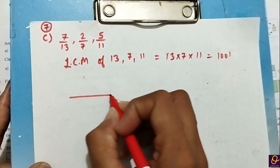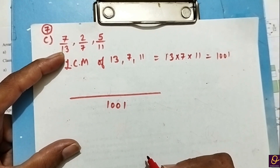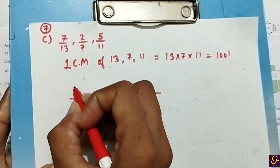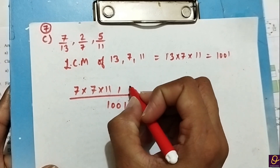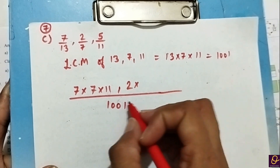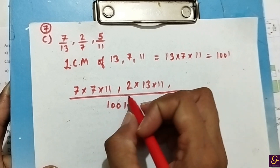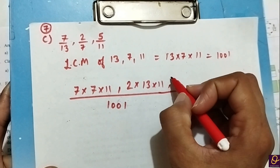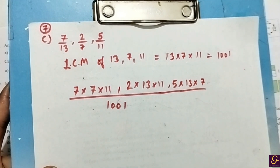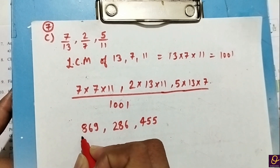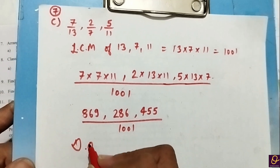1001 ko 13 se divide karna hai toh 13 ko chodke dono number note kar denge: numerator hai 7 × 11. Then numerator 2 × denominator 7 — in dono ko multiply kar denge. Then 11 se divide karenge toh 5 × 13 × 7. Inko multiply karke note kar lete hain.